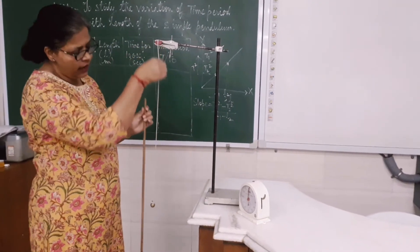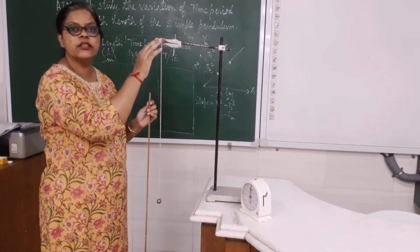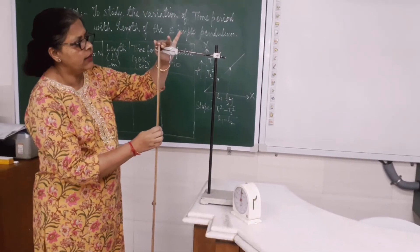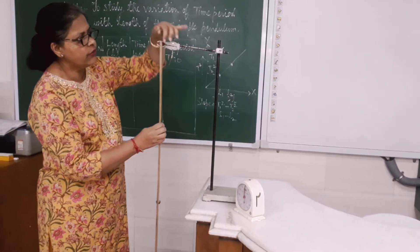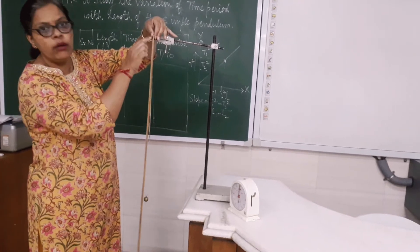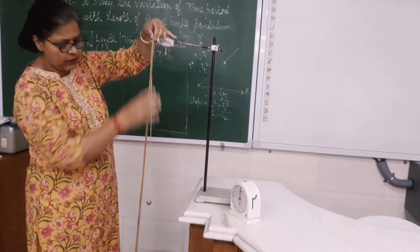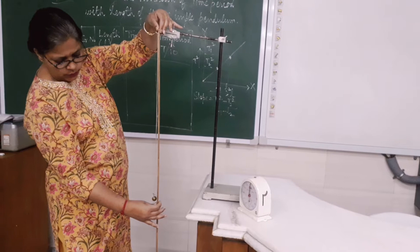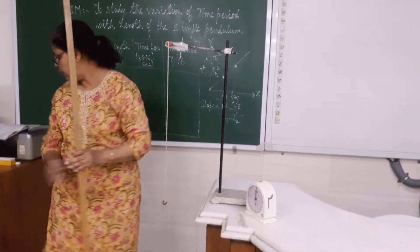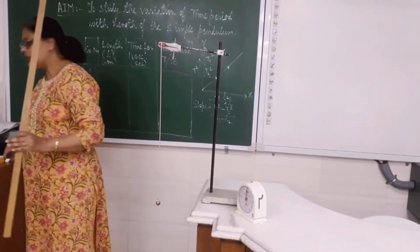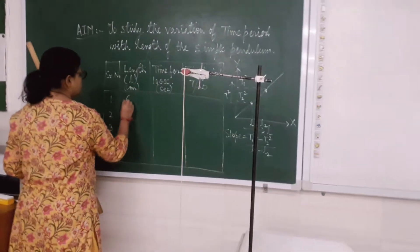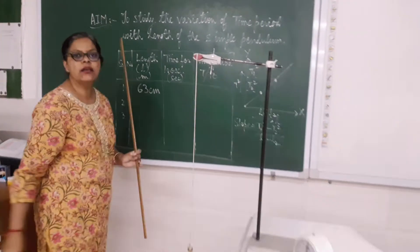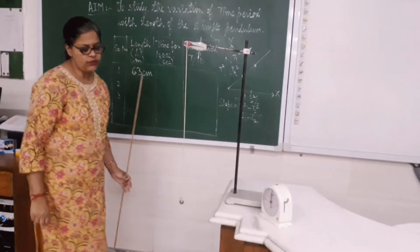First of all I will hang the simple pendulum from the rigid support and I will measure the length of the pendulum starting from the point of suspension to the center of the bob. So I have measured the length of this pendulum — it is 63 centimeters. 63 centimeters is the length of this pendulum.